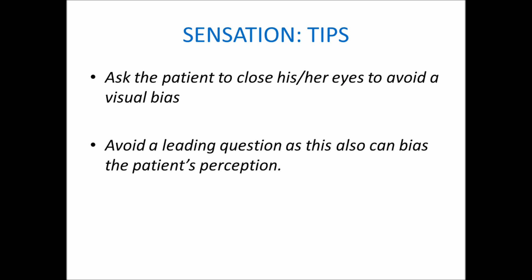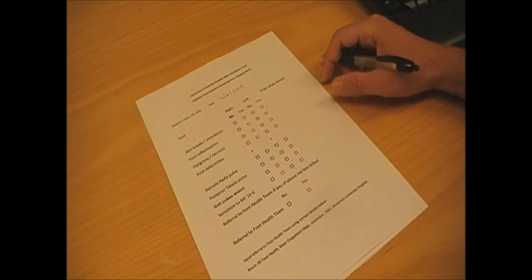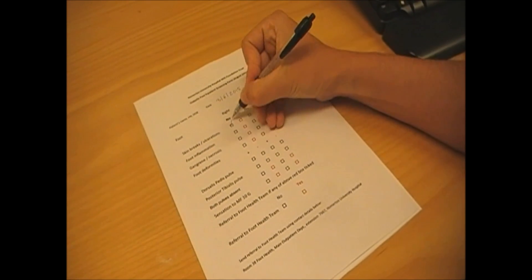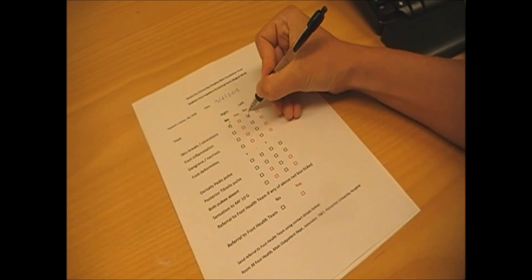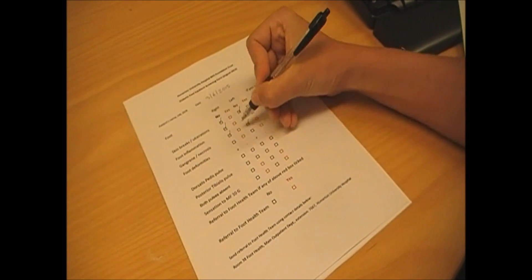Top tips: Ask the patient to close the eyes to avoid a visual bias. Do not ask leading questions, as this can also bias the patient's perception. Always record your findings for each foot for inspection, circulation and sensation. Act upon them as appropriate.